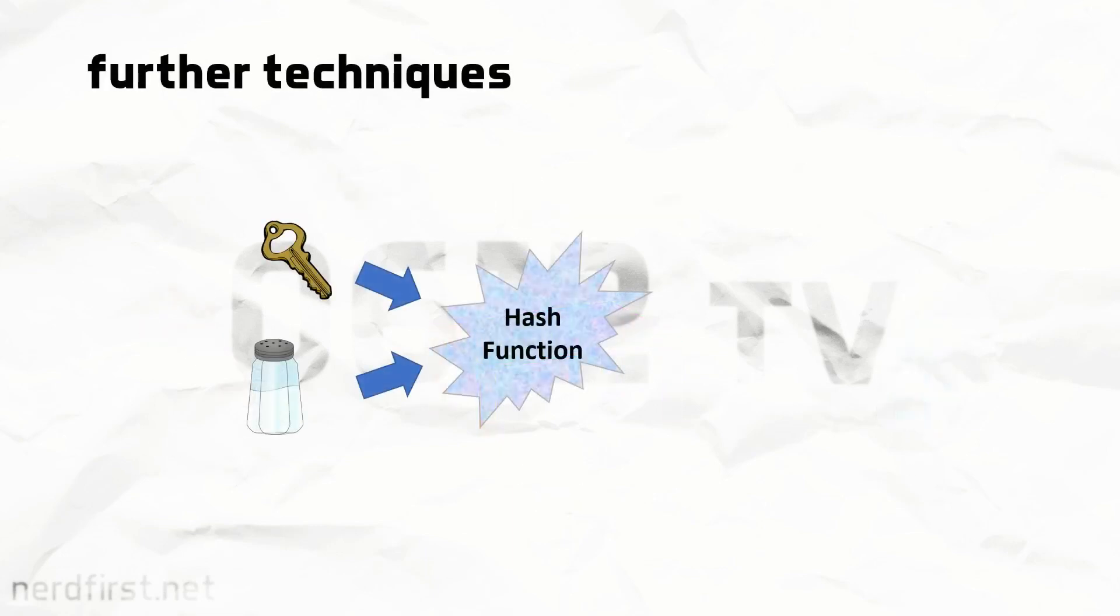For example, certain methods involve using a hash function, not once, but multiple times, potentially thousands of times. After combining the password and the salt, the two things are hashed, the result is hashed again, and again, and again, and again.